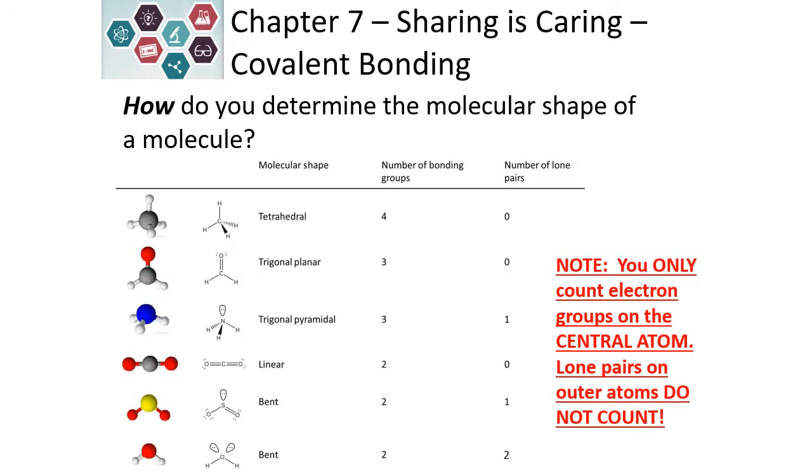Using the numbers of bonding groups and lone pairs, we can determine the shape of our molecule. Please note that you only look at the central atom when you're counting lone pairs and bonds. We do not look at the lone pairs on the outside of the atom. They do not count and they're not considered in the molecular shape.